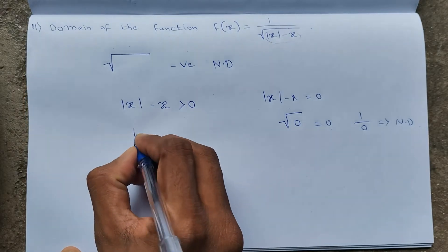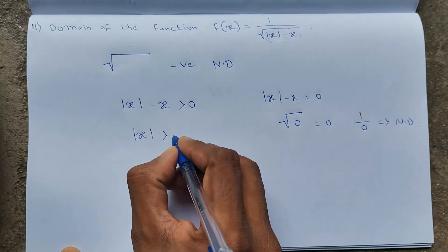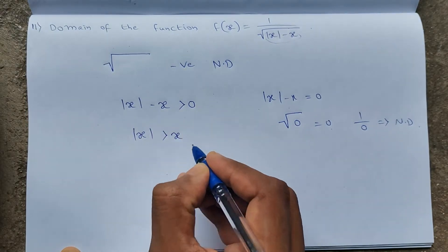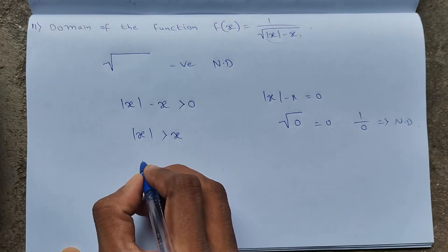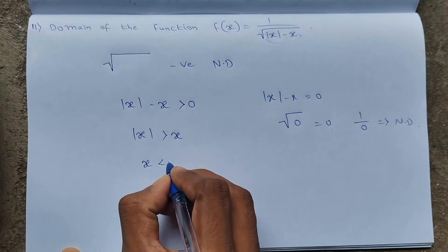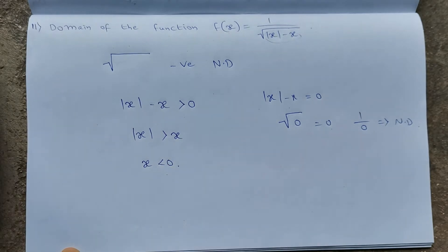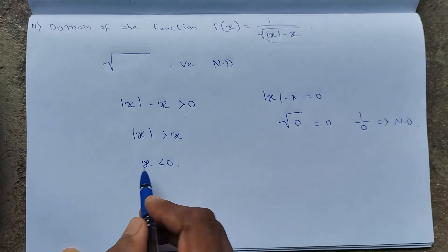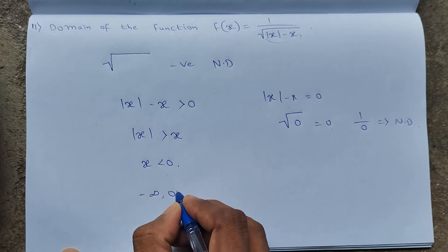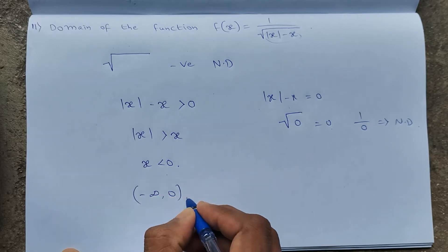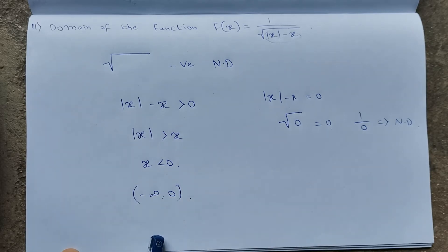So we get |x| > x. This is possible only if x is less than 0. Less than 0 means from minus infinity to 0. Therefore, the domain of the given function is (−∞, 0).